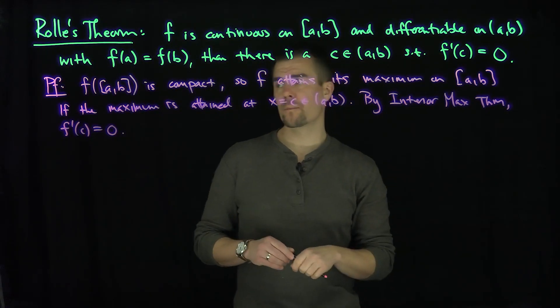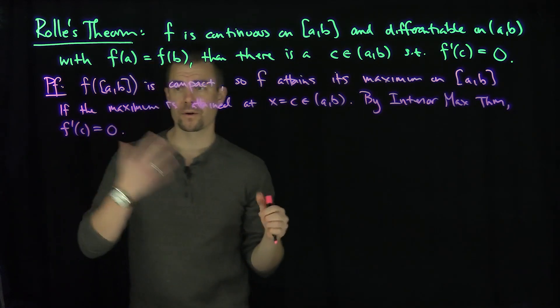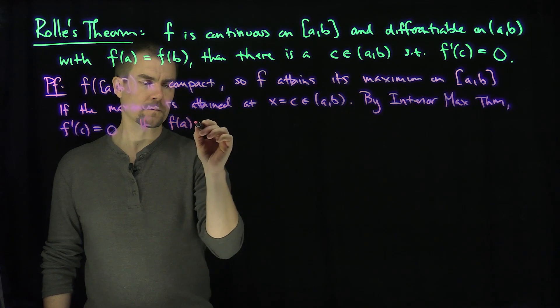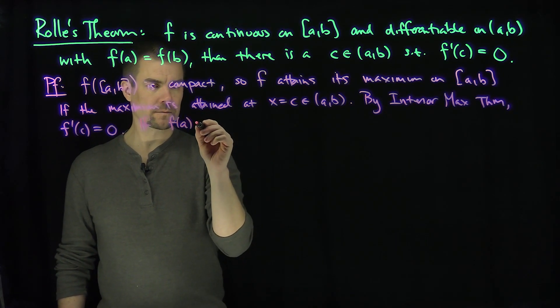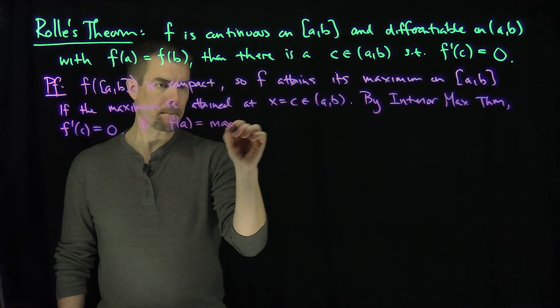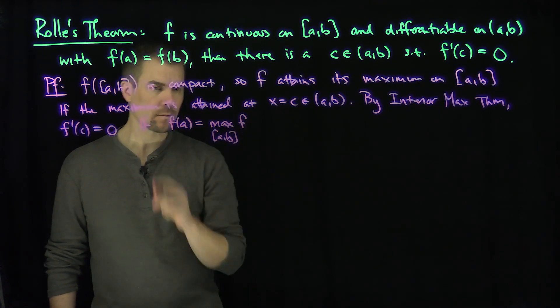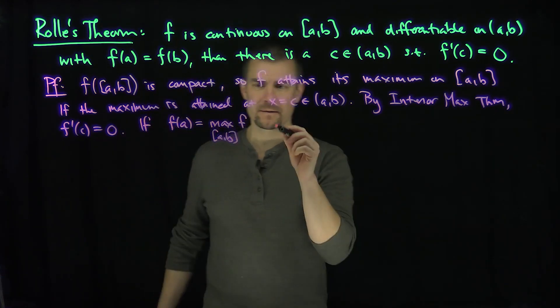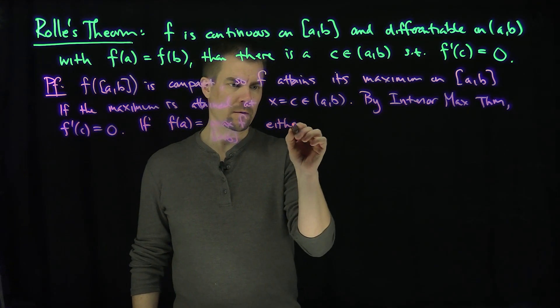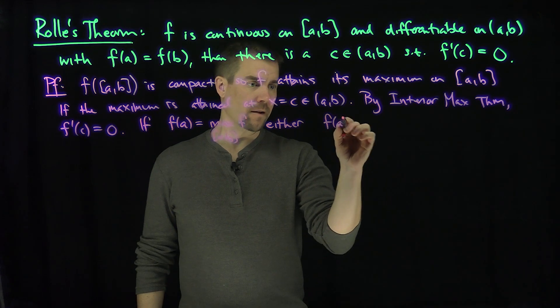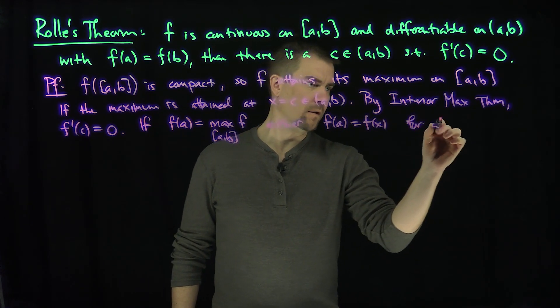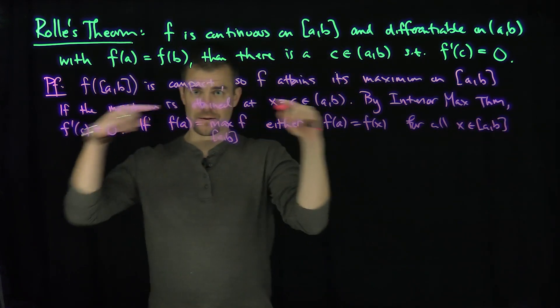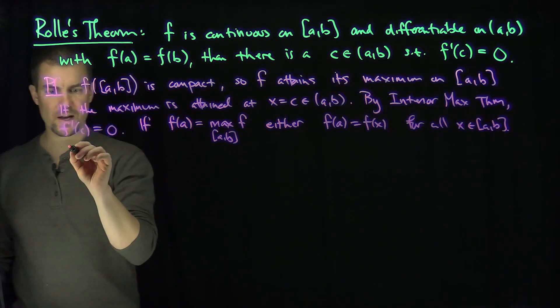Now let's suppose the maximum occurs at either a or b on the boundary. Without loss of generality, we can assume it occurs at a. So if f(a) is the maximum value, then one of two things can happen. Either f(a) is equal to f(x) for all x between a and b. That can certainly be the case, in which case the function is constant, then f is constant.